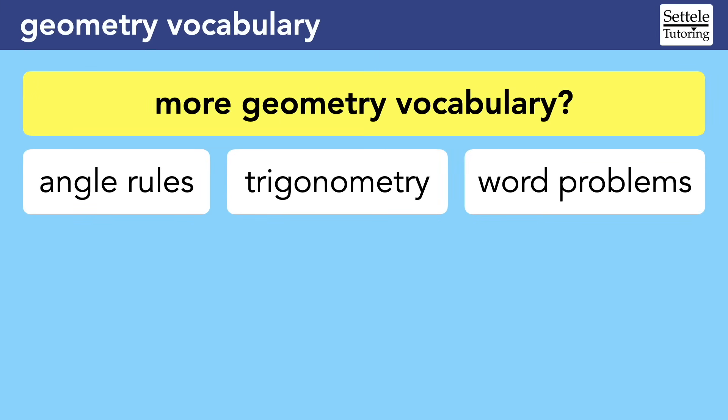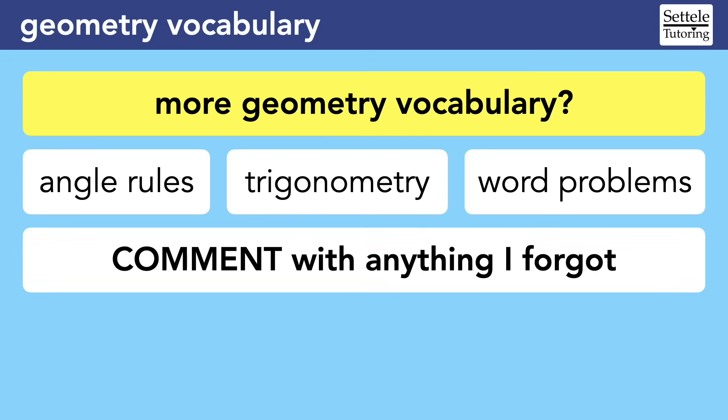Those last few slides were very advanced, so if you're trying to memorize this lesson, start with the beginning. There are a few other geometry vocabulary words left out of this lesson because they're covered in more detail in other videos. You can learn about different types of angles in my angle rules lesson, and you can learn about sine, cosine, and tangent in my trigonometry lesson. A lot of geometry is also less about geometry itself and more about understanding word problems, like saying that one line is twice as long as another. If I forgot anything you think is important, please comment on this video with the word and a brief definition — it's a great way to help out other SAT students.